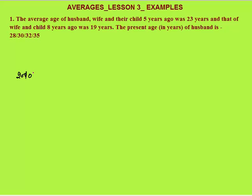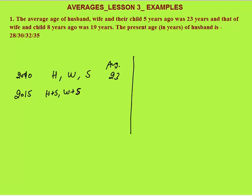Let's say the present year is 2015, so five years ago is 2010. Let the husband be h years old, wife be w years old, and son be s years old at that time. Their average age was 23 years. Now five years later in 2015, husband will be five years older, wife will be five years older, and son will also be five years older. As discussed in Lesson 1, if each number increases by the same constant, the average also increases by the same constant. So the average will become 23 plus 5 equals 28 years.